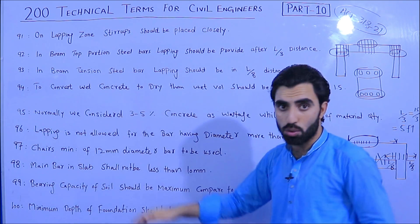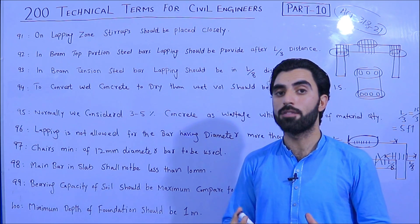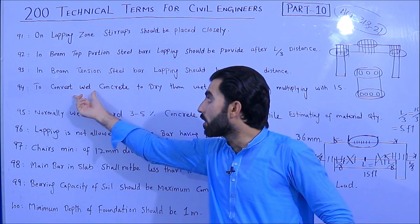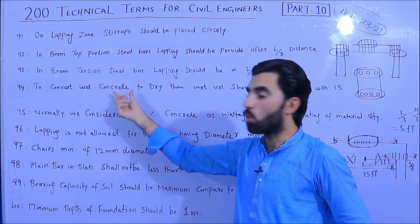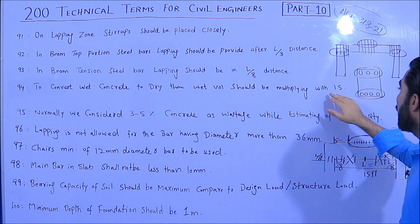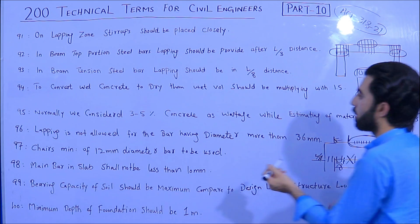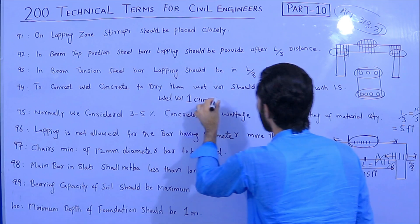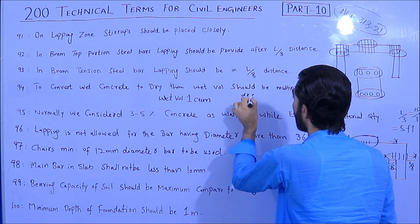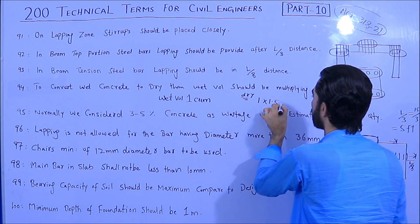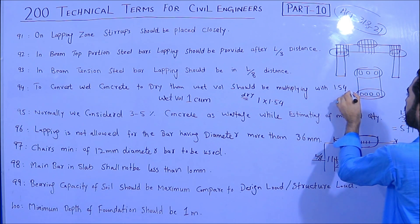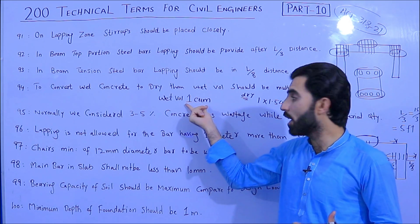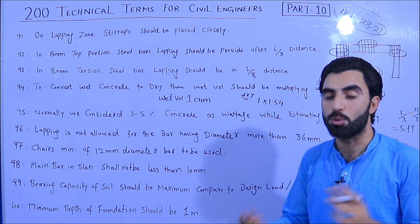Term 94: To convert wet concrete volume to dry volume, multiply by 1.54. For example, if the wet volume is 1 cubic meter or 5 CFT, multiply that wet volume by 1.54 to get the dry material quantity, especially useful in estimation.